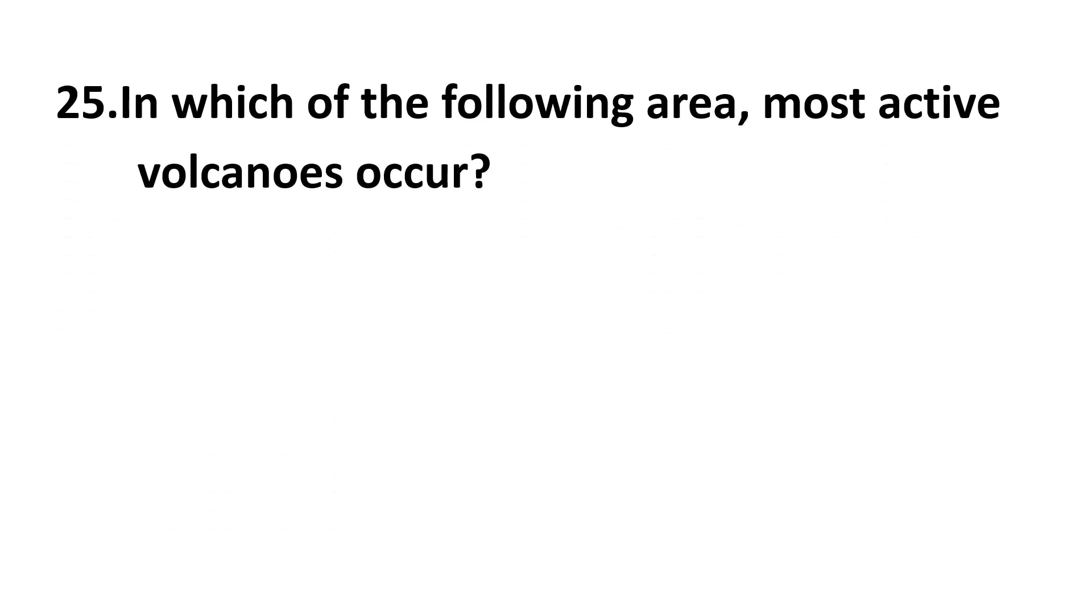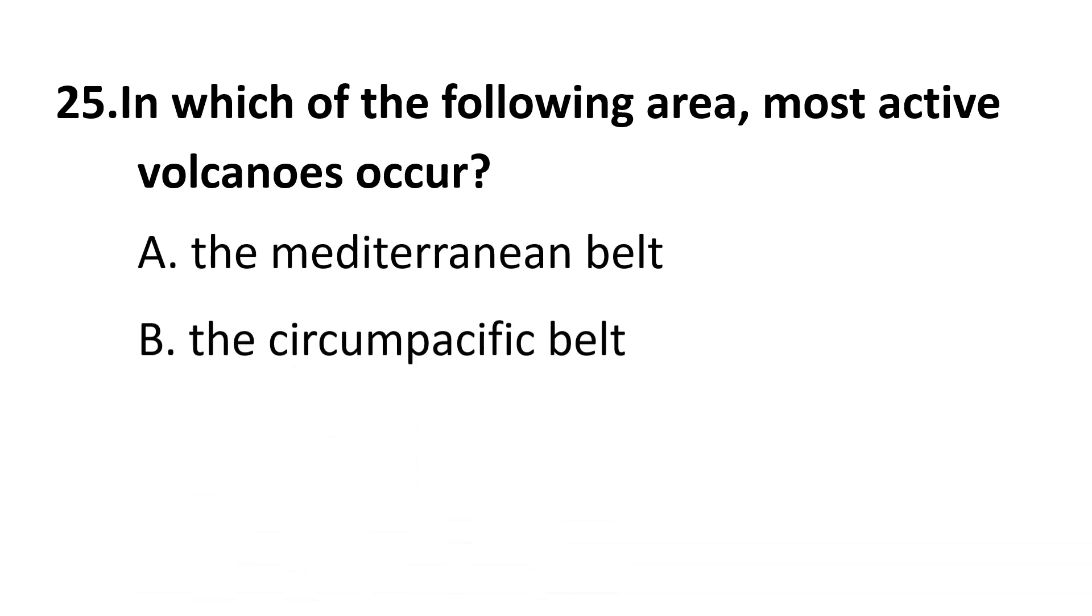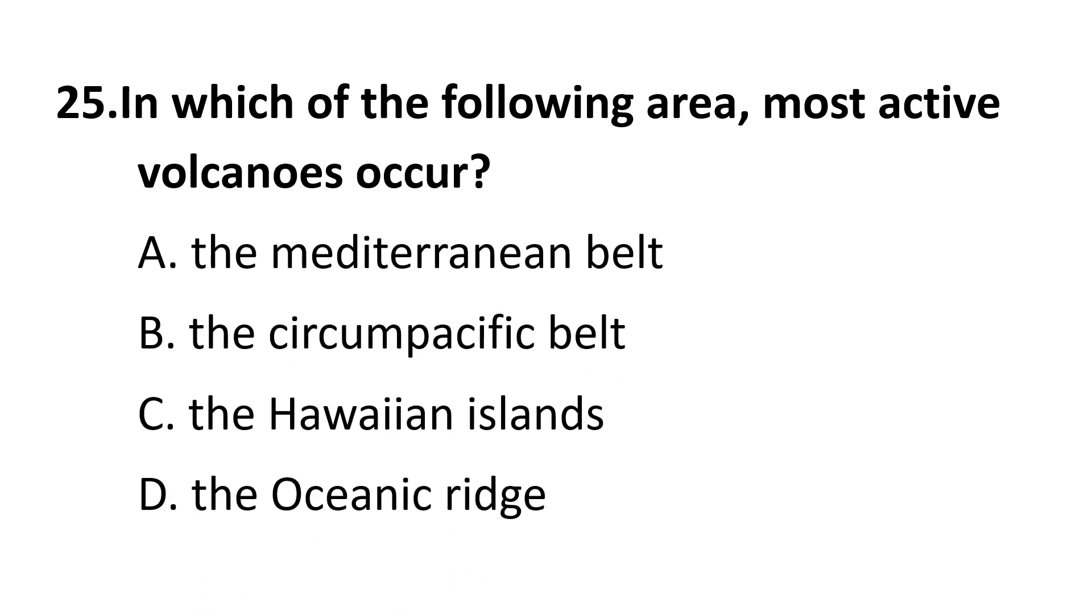25th question: in which of the following area most active volcanoes occur? Choices are A Mediterranean belt, B Circum-Pacific belt, C Hawaiian Islands, D Oceanic ridge. The correct answer is B Circum-Pacific belt.